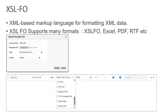The other format is XSL FO, which is a bit more complex than the previous one but supports a larger number of output formats. Just like an RTF template supports RTF, PDF, Excel, Text, and others, XSL FO supports all those formats plus a special format called FO Formatted XML.